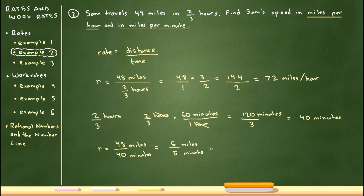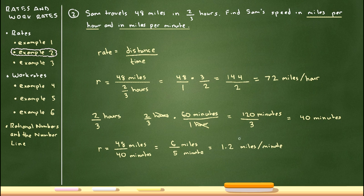Six-fifths can be converted to a decimal: 6 divided by 5 equals 1.2 miles per minute. That's a reasonable answer — traveling in a car, you could certainly go 1.2 miles in a minute. When doing these problems, always check if your answer makes sense in context. If you got something like 6,000 miles per minute, that would be suspicious.